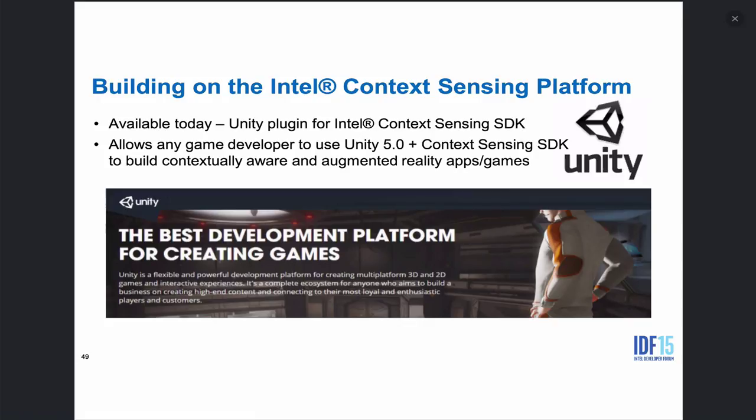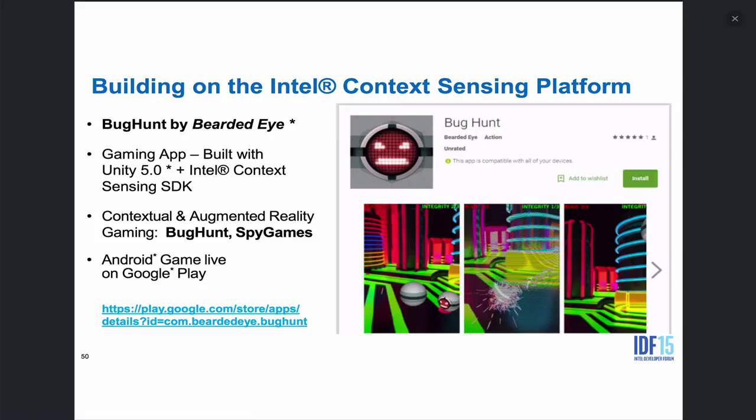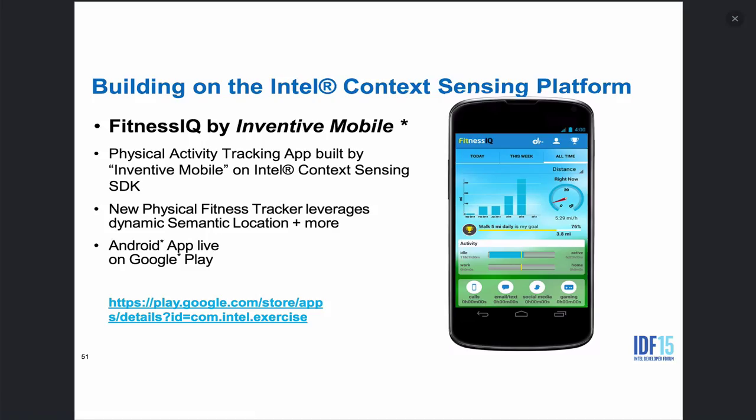Unity is the leading 3D gaming platform, and there's a third-party group that has already released a plug-in between Unity and the context-sensing SDK — you can get this today. This allows any game developer to make your game contextually aware. One example is Bug Hunt, a game released by leading Android developer Bearded Eye. This is live in market — it's augmented reality and contextually aware gaming. Fitness IQ is released by a company called Inventive Mobile and leverages the context-sensing SDK for health usages. It's a great app — I encourage you to get it.